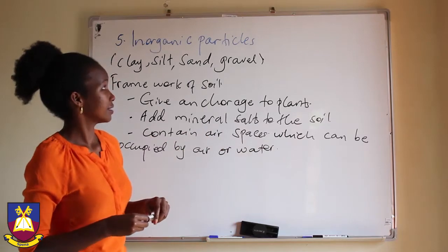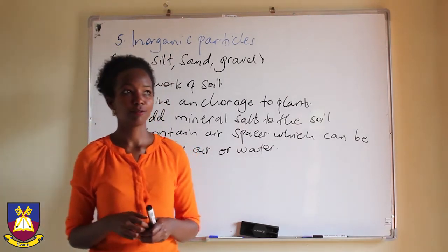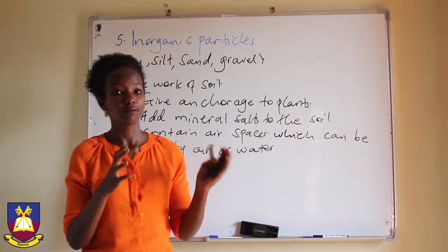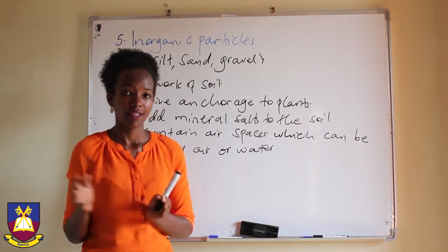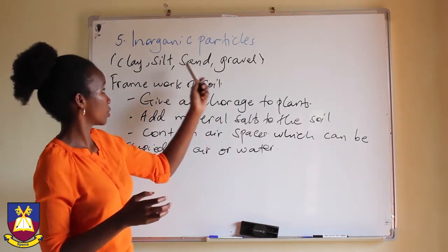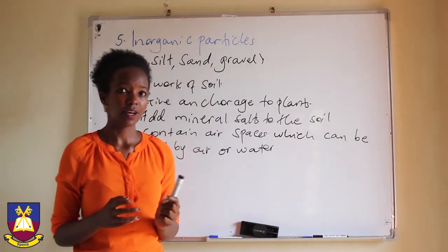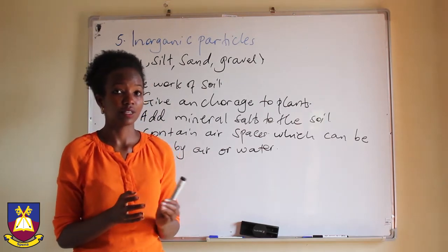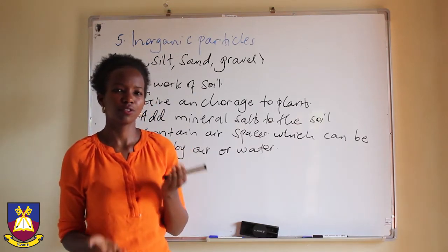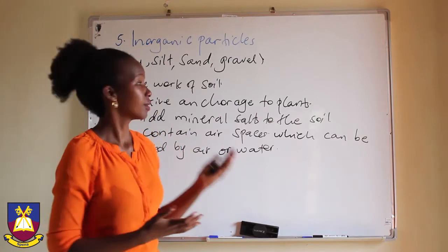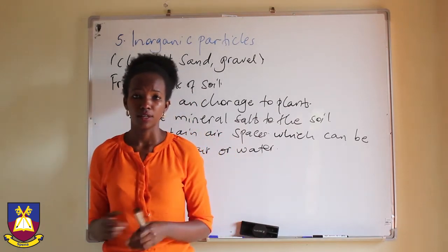Inorganic particles also determine the type of soil. We have clay soil, sandy soil, and loamy soil. If a soil has more clay than the other components — sand and gravel — then we say it is clay soil. If it has more sand and gravel, then it is sandy soil. And if it has roughly equal amounts of clay, silt, and sand, plus humus, then that is loamy soil.